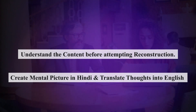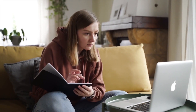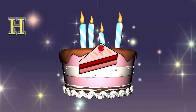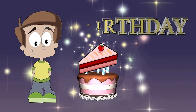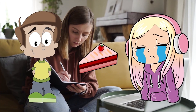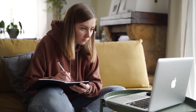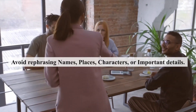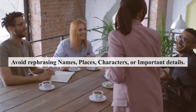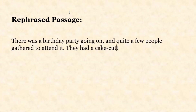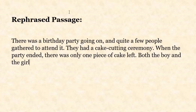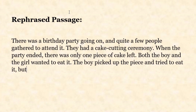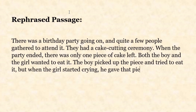Applying this to the sample story: a birthday party is going on where many people have come. There is a cake cutting, and there is one piece of cake left which both the boy and girl wanted. The boy took the piece of cake, but when the girl started crying, he gave it to her. The boy's parents were very happy about it. To reconstruct in your own words: 'There was a birthday party going on, and quite a few people gathered to attend it. They had a cake cutting ceremony. When the party ended, there was only one piece of cake left. Both the boy and the girl wanted to eat it. The boy picked up the piece of cake and tried to eat it, but when the girl started crying, he gave the piece of cake to her. The boy's parents were happy when they saw that.'